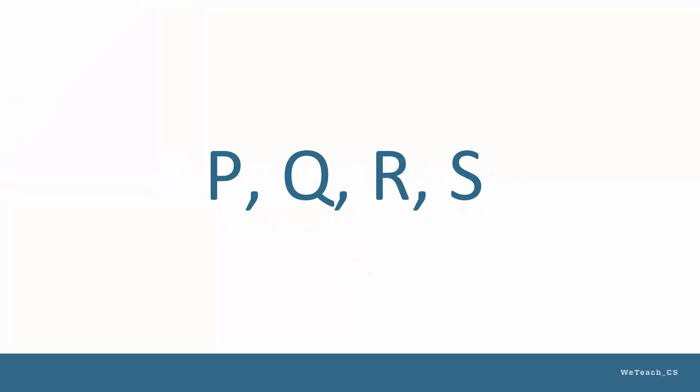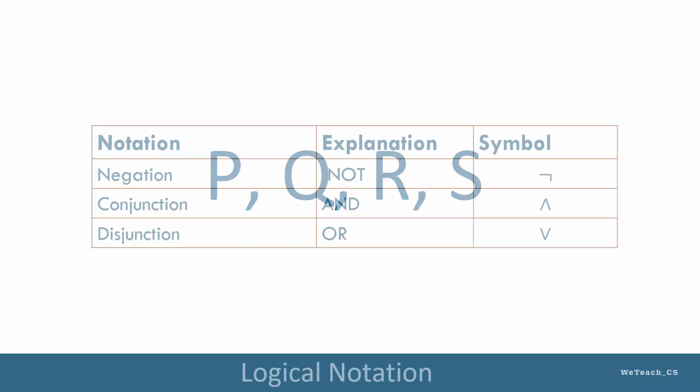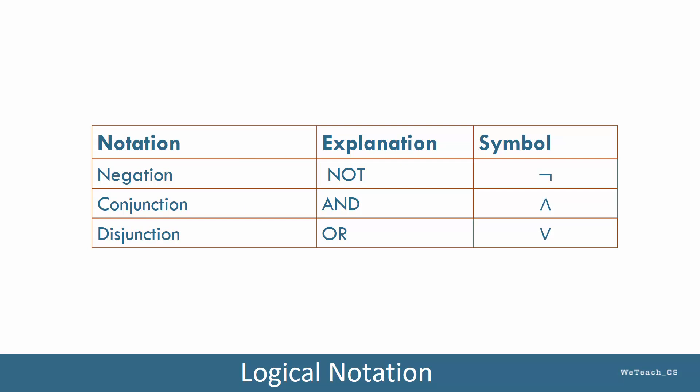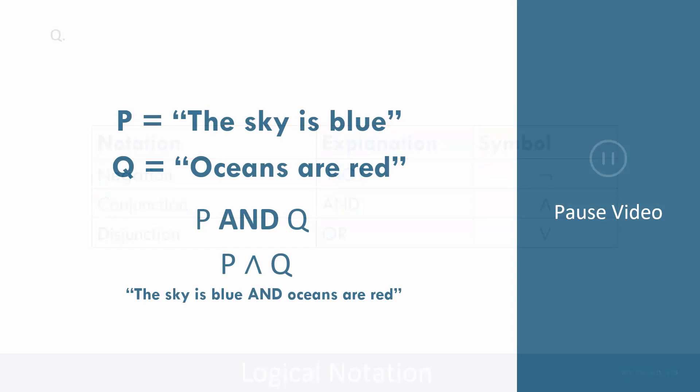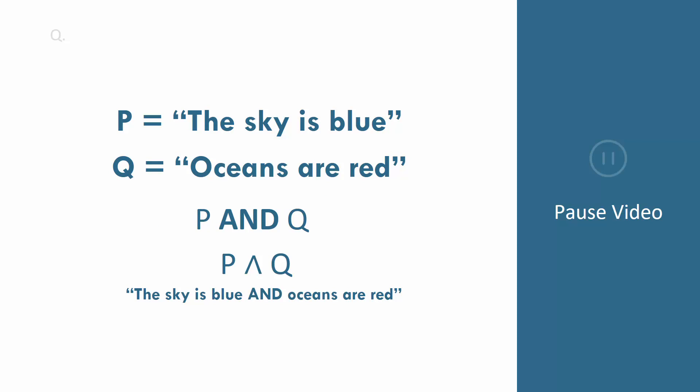Often, you will see letters such as P, Q, R, and S to symbolize propositions and simplify the appearance of propositional statements, especially in more complex combinations. There are also symbols for the ideas of not, and, and or, as you can see in this table. On the next few slides, you can see the ideas we previously examined expressed using letters and symbols. Pause the video on each one and study these carefully to see how they match the meaning of the sentence.